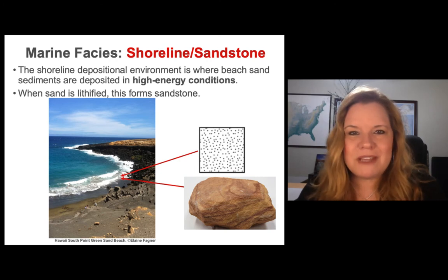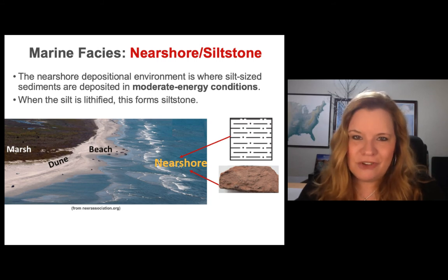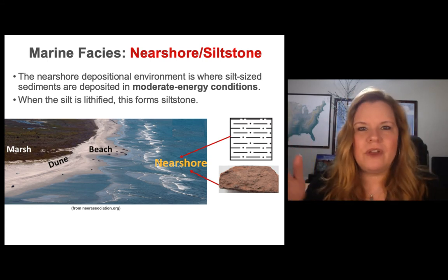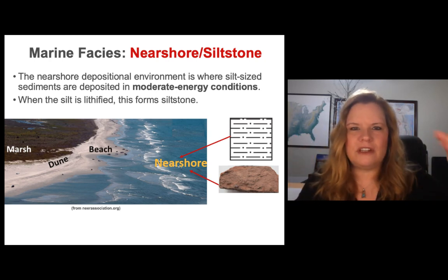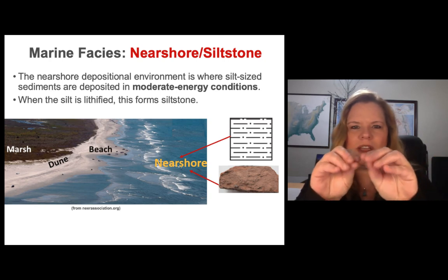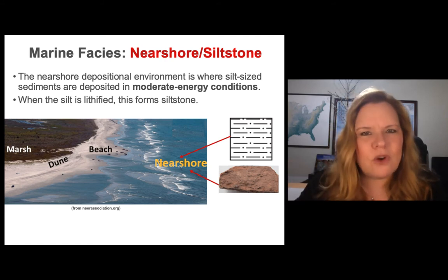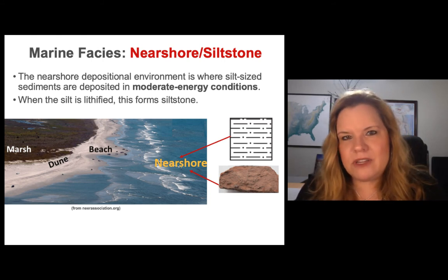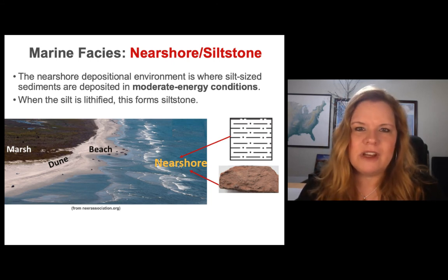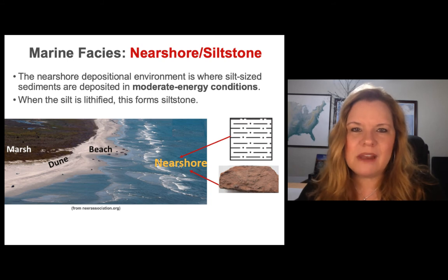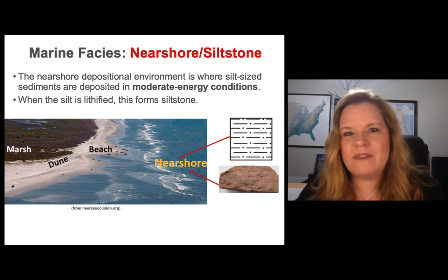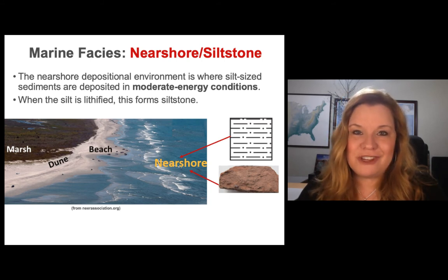At the same time the shoreline is forming, we have a nearshore environment where we form siltstones. I don't go from sand and automatically shift into siltstone — it takes a gradual change over distance. As you look at rock layers, you'll see sandstone start to get smaller grains until you get into siltstone. This is a moderate-energy environment — still enough energy to keep some sands in suspension, but low enough to also form mudstone and shales. The mixture of sand and mud creates siltstone in the nearshore environment.